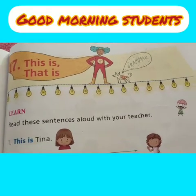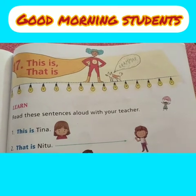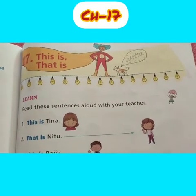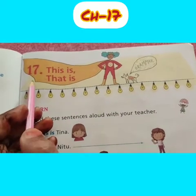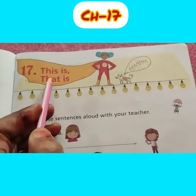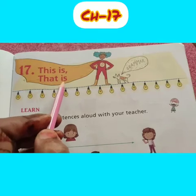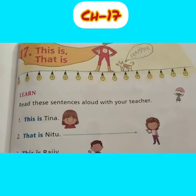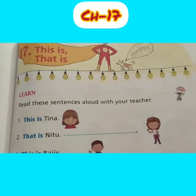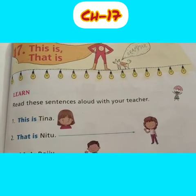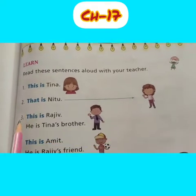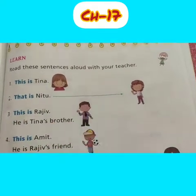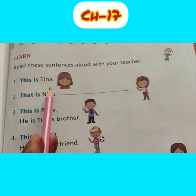Hey, good morning my dear children. I hope you all are well. So let's start our grammar course, chapter number 17: This is / That is. In this chapter we use 'this' and 'that'. What is the use of this and that? So let's start our chapter. Read these sentences aloud with your teacher. First one: This is Tina.